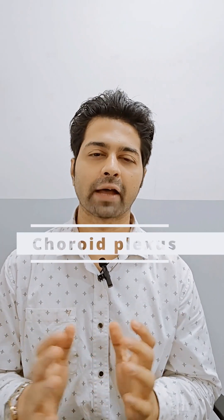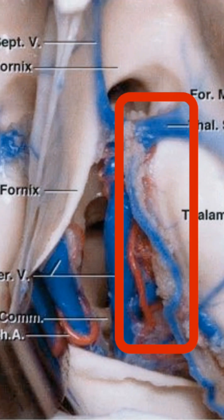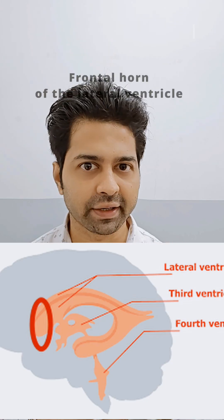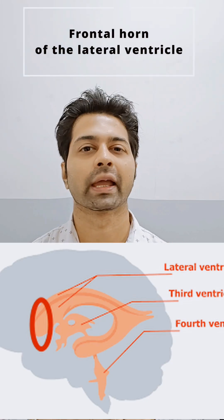Which part of the lateral ventricle does not have choroid plexus, and what is the importance of that? The answer is the frontal horn.